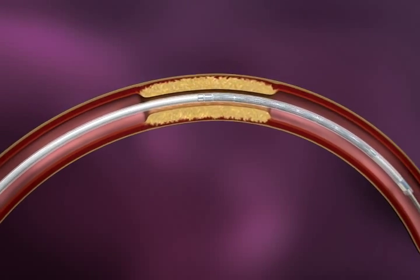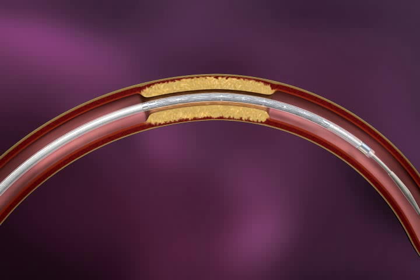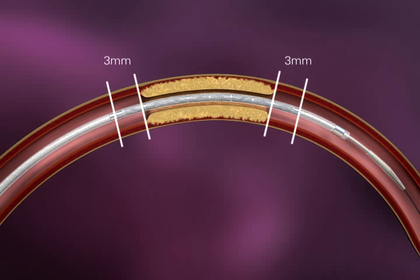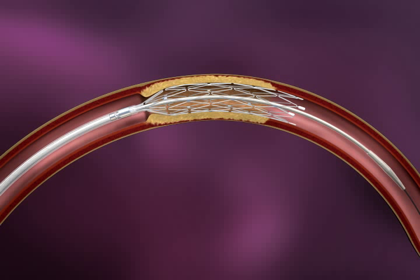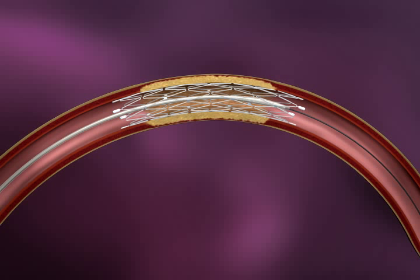Slightly withdraw the delivery system until the stent is directly aligned with the lesion. The stent should extend approximately 3 mm over each side of the lesion. The stent is now ready to deploy. To deploy the stent, the inner body should be held stationary with one hand while the other hand withdraws the outer body. This results in an unsheathing of the stent. Once the stent is fully deployed, the delivery system is removed.